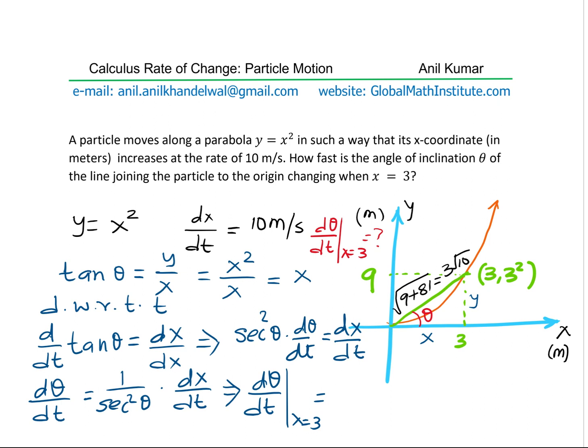So clearly, from here, we do get that secant theta equals hypotenuse, which is 3 square root 10 over the base, which is 3. Rather, it is equal to square root of 10.